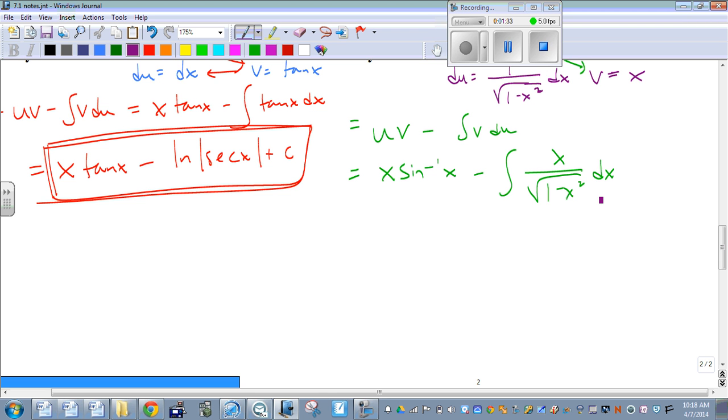Actually, it's just going to be a simple u substitution. If we set the 1 minus x squared equal to u, our du is going to be negative 2x dx. And that's going to take this x and dx, we're going to multiply it by negative 2. That's going to give us our du.